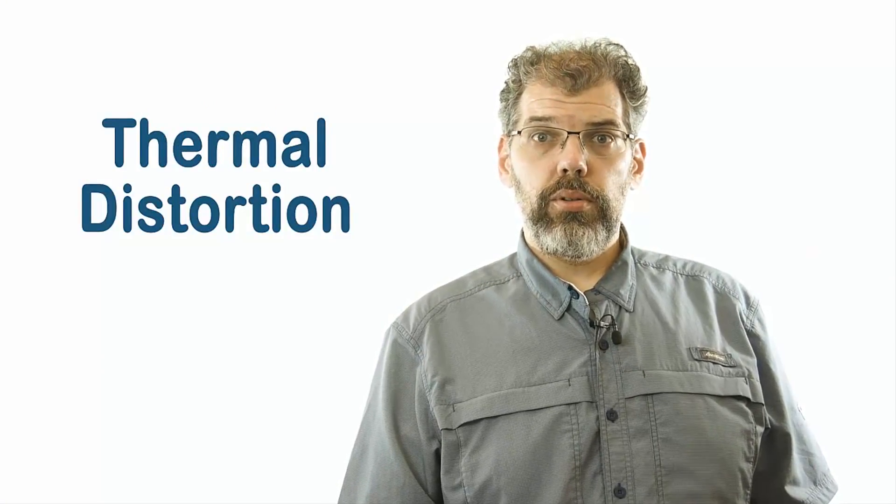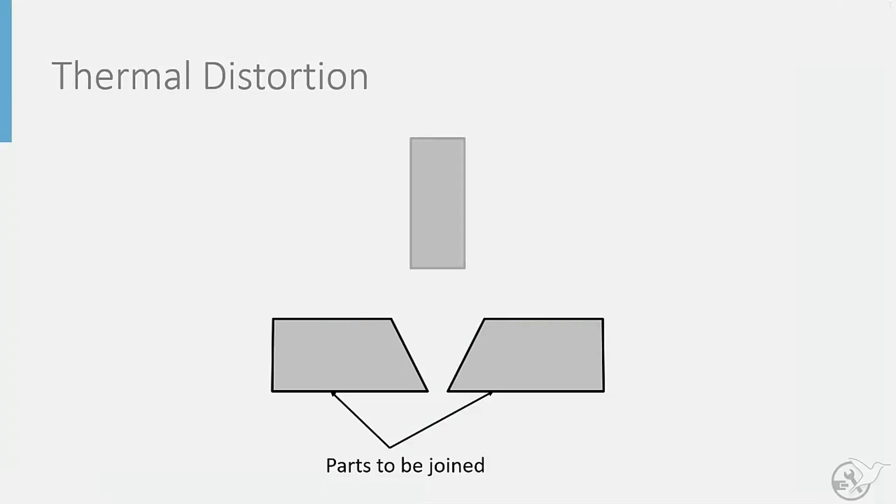Another potential disadvantage to consider is the possibility for thermal distortions. Welding requires a heat source which will melt the weld material, allowing it to fill any space between the parts to be joined. As a result, the fusing of the material occurs when the weld region is still very hot.